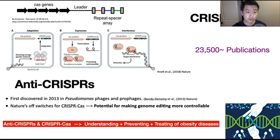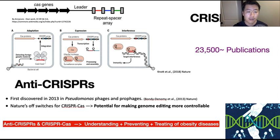Anti-CRISPR was first discovered back in 2013 by Joseph Bondy et al. in Pseudomonas phages and prophages.